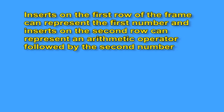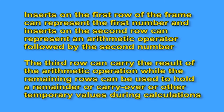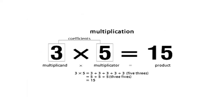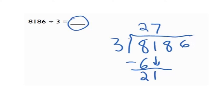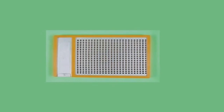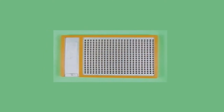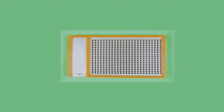A sequence of shapes on a sequence of inserts can represent a mathematical expression. Inserts on the first row of the frame can represent the first number, and inserts on the second row can represent an arithmetic operator followed by the second number. The third row can carry the result of the arithmetic operation, while remaining rows can be used to hold a remainder, carry-over or other temporary values during calculations. This design is intended for the initial learning of young children — establishing shape and direction identification and use of simple addition, subtraction, multiplication and division of one, two or even three digit numbers. Once these skills are mastered, the child should be ready to move on to higher skills with larger computations on the standard Taylor frame.